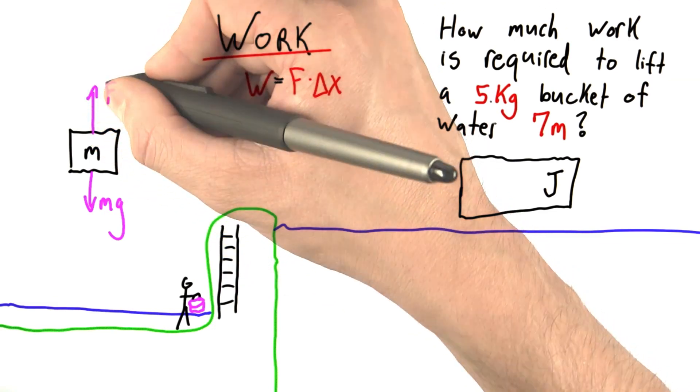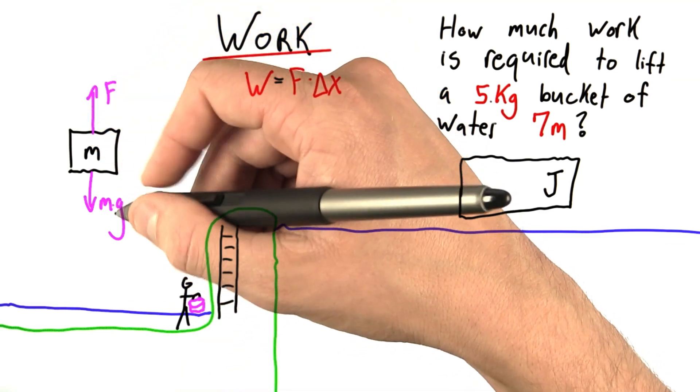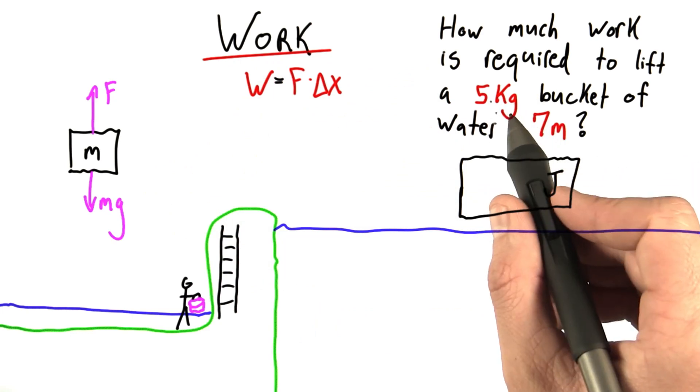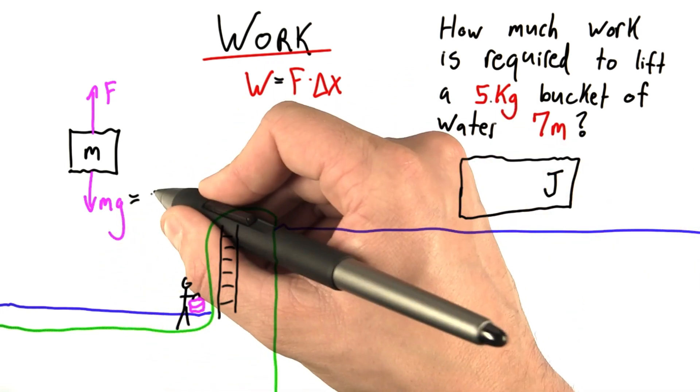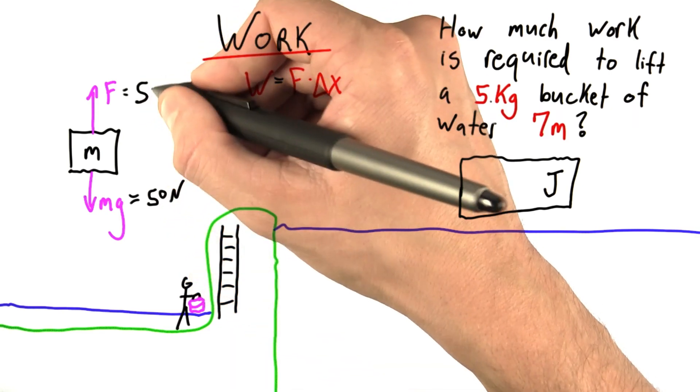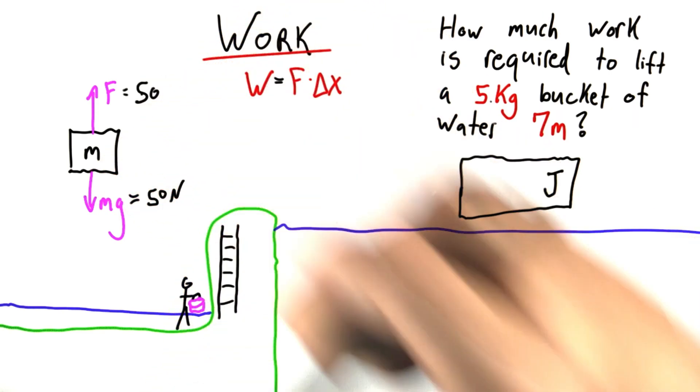I'm going to have to exert some force, and this force actually must balance mg. So in the case of a 5 kilogram bucket, mg would be 5 times 10, 50 newtons, as would the force I have to supply to hold the bucket.